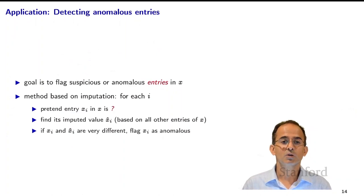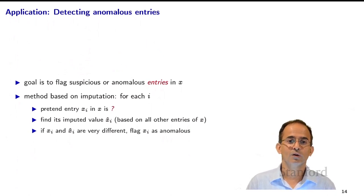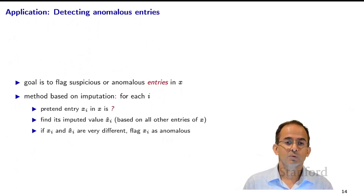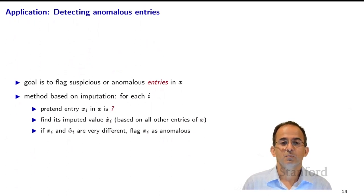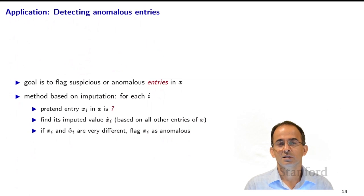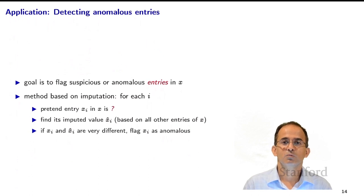Imputation can also detect anomalous entries — not anomalous records, but anomalous components of a particular x. For each dimension i, we pretend x_i is unknown and impute x-hat_i based on all other entries. If x_i and x-hat_i are very different, we flag x_i as anomalous. In the movies example, this identifies movies where the customer's actual rating differs greatly from what we'd expect based on their other ratings.